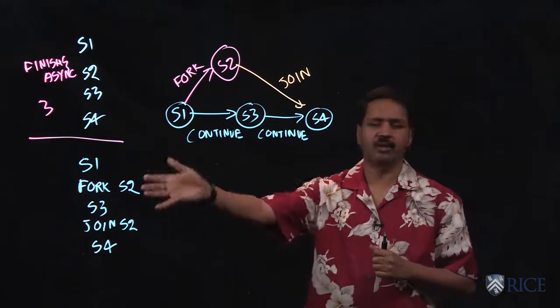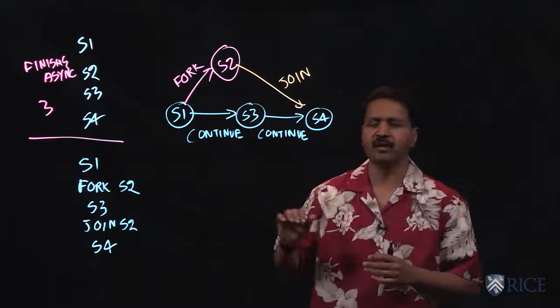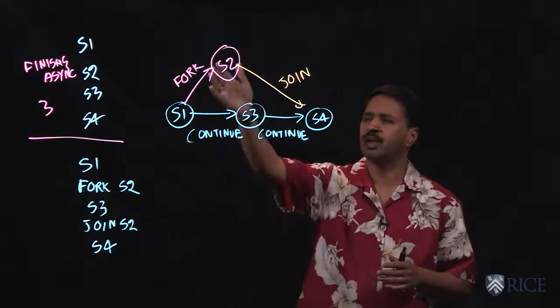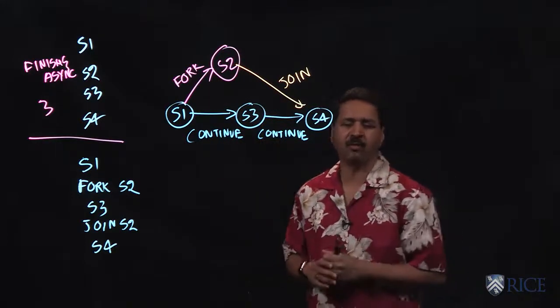If you just had a normal sequential program with no fork and join, our graph would just be a straight line with continue edges. But with parallelism, we see we have these fork edges and the join edges.